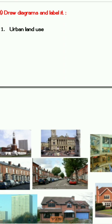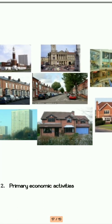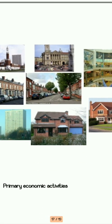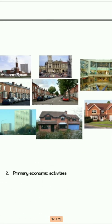Next is urban settlements. I have taken a Google image for this. You can see there is a shopping mall complex, houses, an institution, hospital, roads, and railways. You can draw according to this reference.